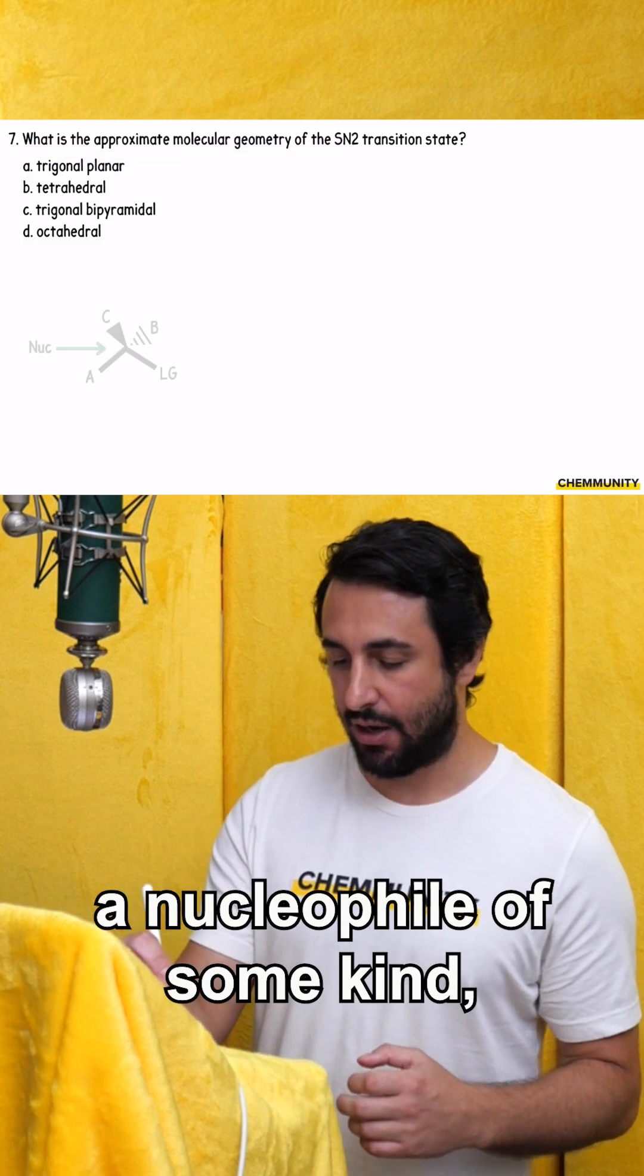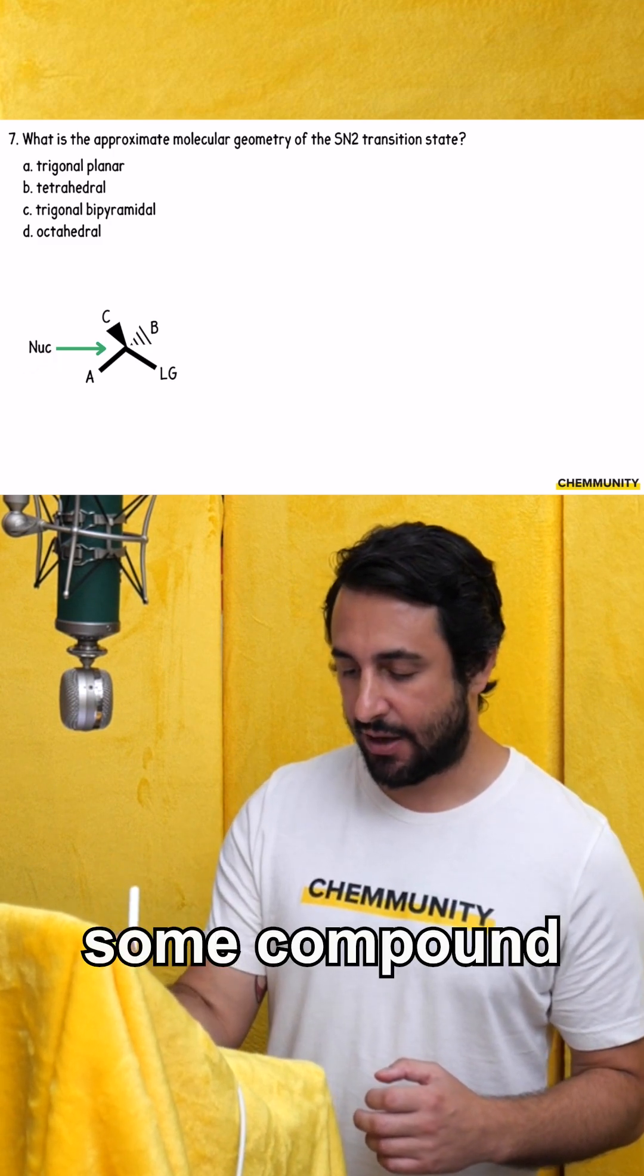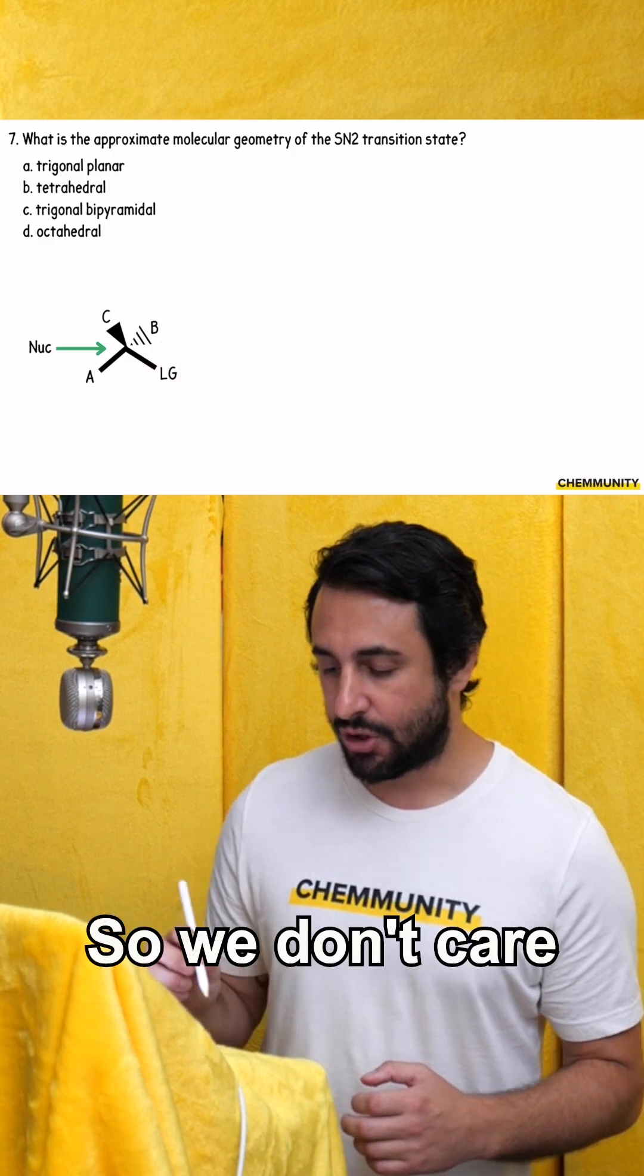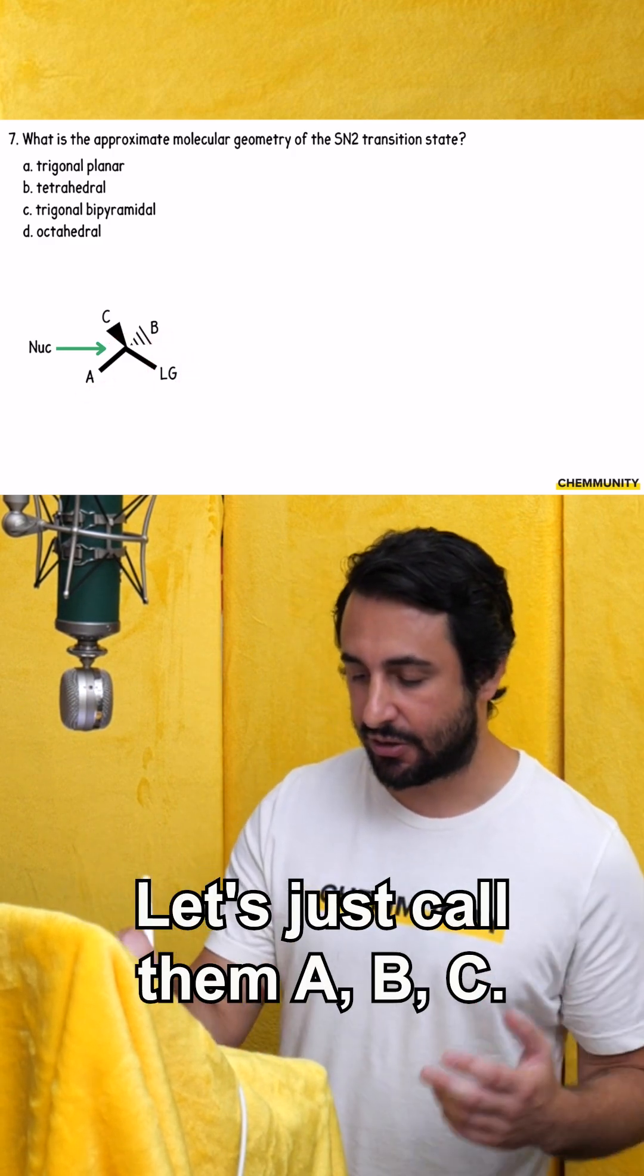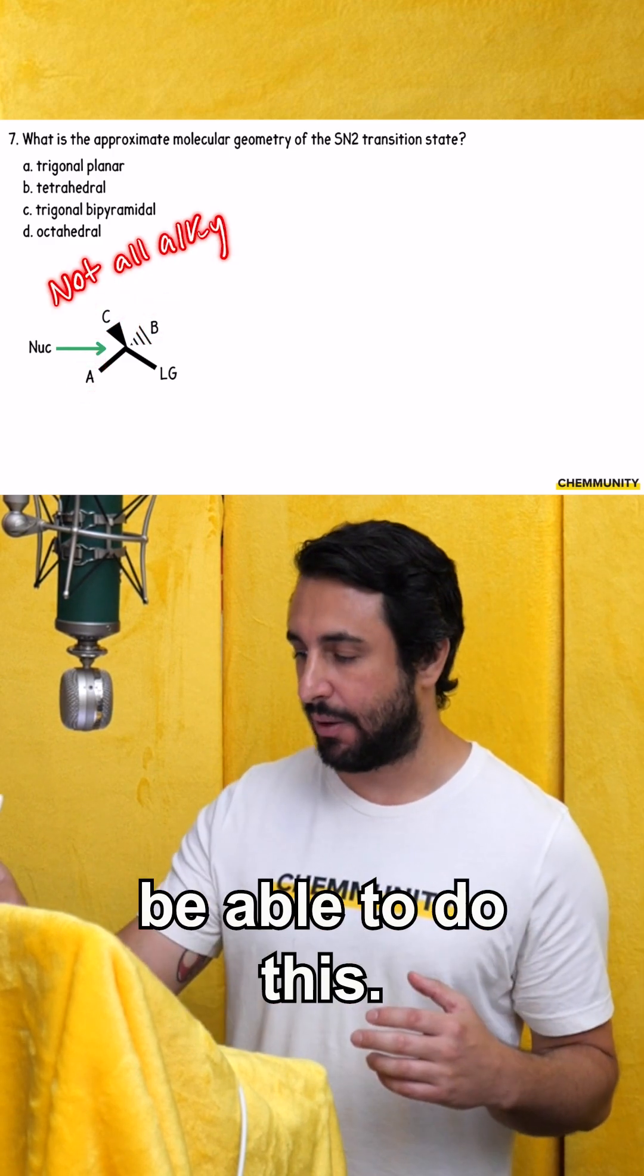We're going to have a nucleophile of some kind, and we're going to attack some compound that has a leaving group. So we don't care what these groups are. Let's just call them A, B, C. They're probably not all alkyl, or we wouldn't be able to do this.